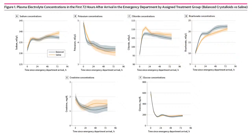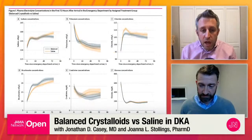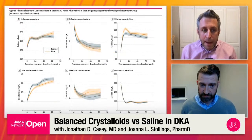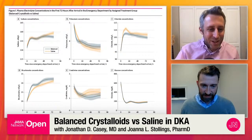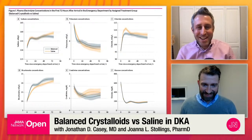Looking at Figure 1, with all the different electrolyte concentration differences, creatinine differences, and glucose, what struck me is how similar they were. Even with resolution being faster by four hours — 13 versus 17 hours for DKA resolution and 10 versus 13.5 hours for insulin drip — everything else being about the same is pretty impressive. So you guys have a great control unit.